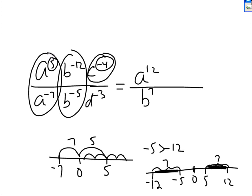c to the negative 4 is only one factor with c in it, and it's on top. Since it has a negative power, I put it on the bottom — that changes the sign of the power to positive. d to the negative 4 is negative in the bottom — it becomes positive on top.